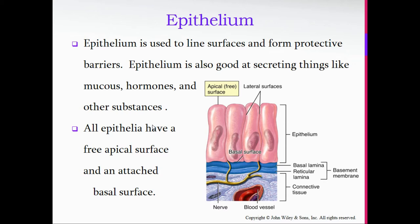All epithelia have a free apical surface and an attached basal surface. The apical surface is the area that is exposed to the open area, whether it's the environment or the inside of an organ. And then it attaches down at the basal surface. This holds true for all epithelial tissue.